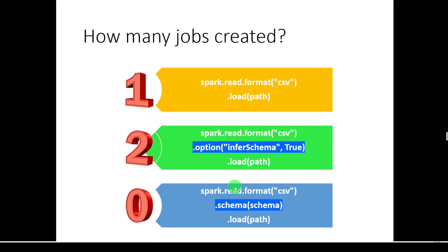In the third method, we are explicitly specifying the schema. From the schema, the Spark engine can get the number of columns along with their data types. So there is no necessity for this method to scan the data until some action is called, and this method will create zero jobs.